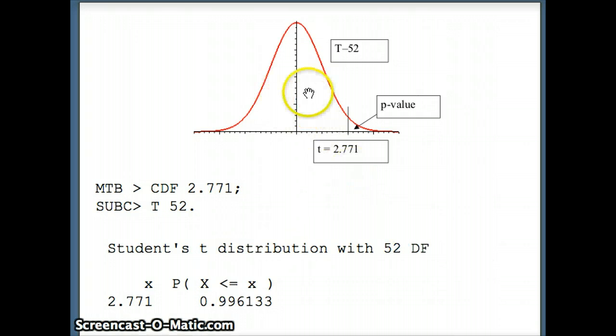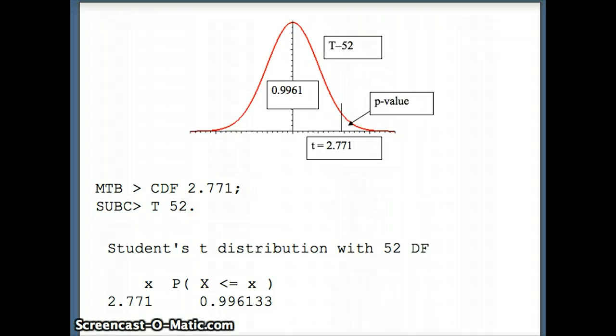The area to the left is 0.9961. The entire area is 1, and that will tell us what the p-value will be. The p-value will be 1 minus 0.9961, or 0.0039. So the p-value for this hypothesis test is 0.0039.